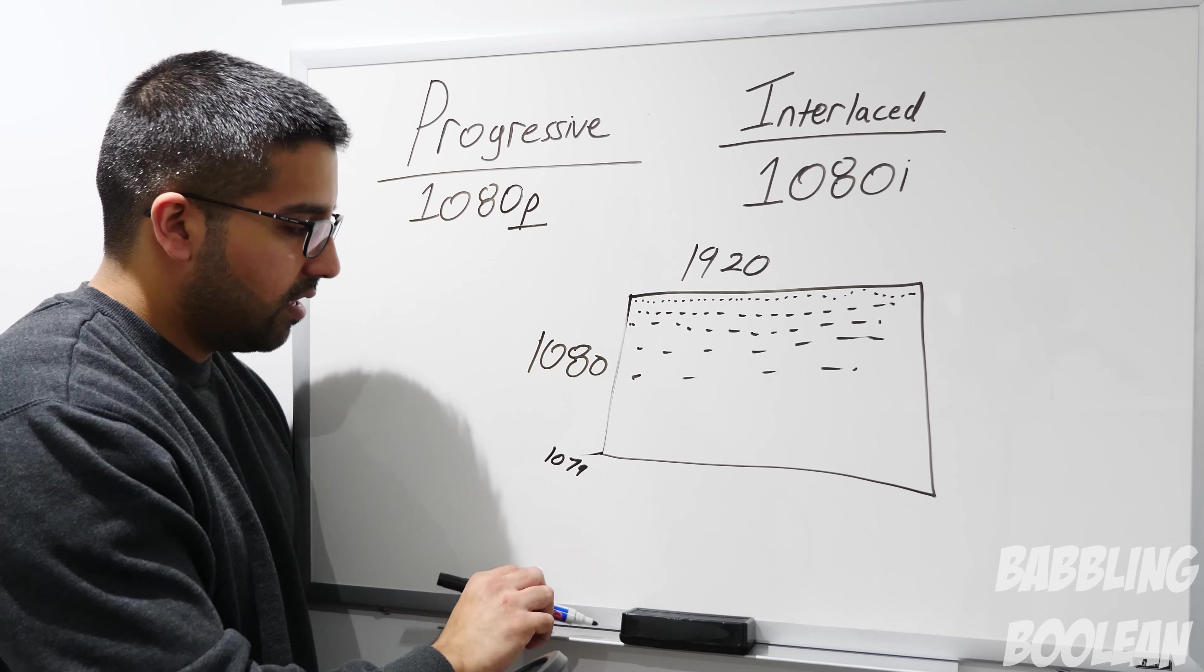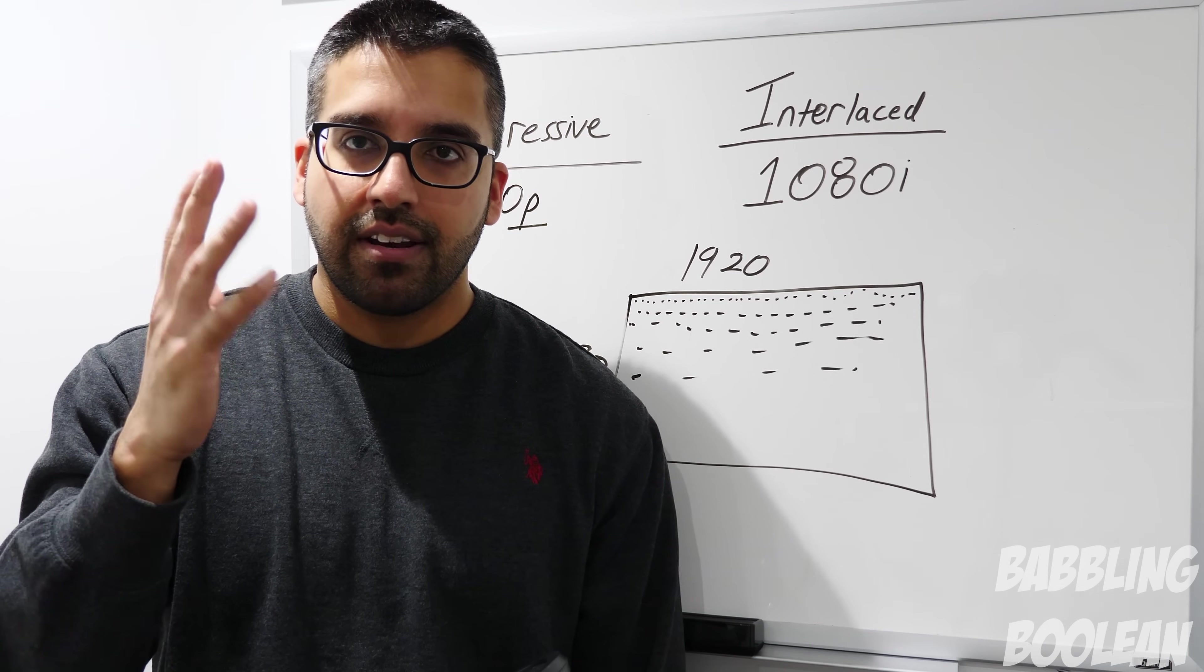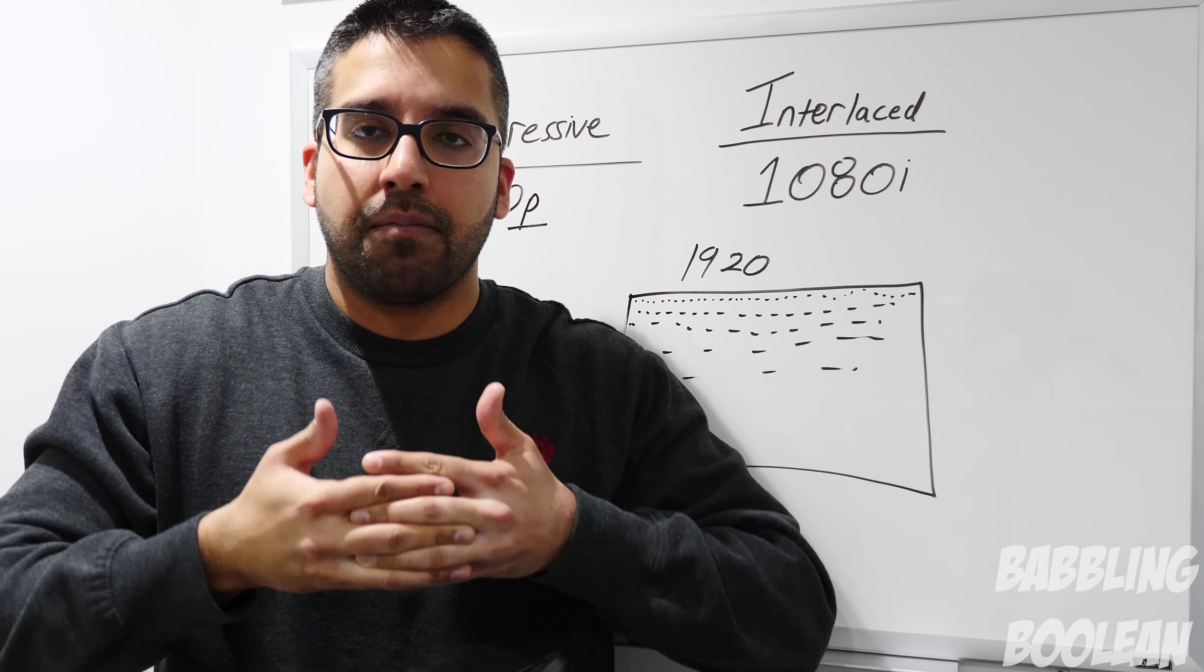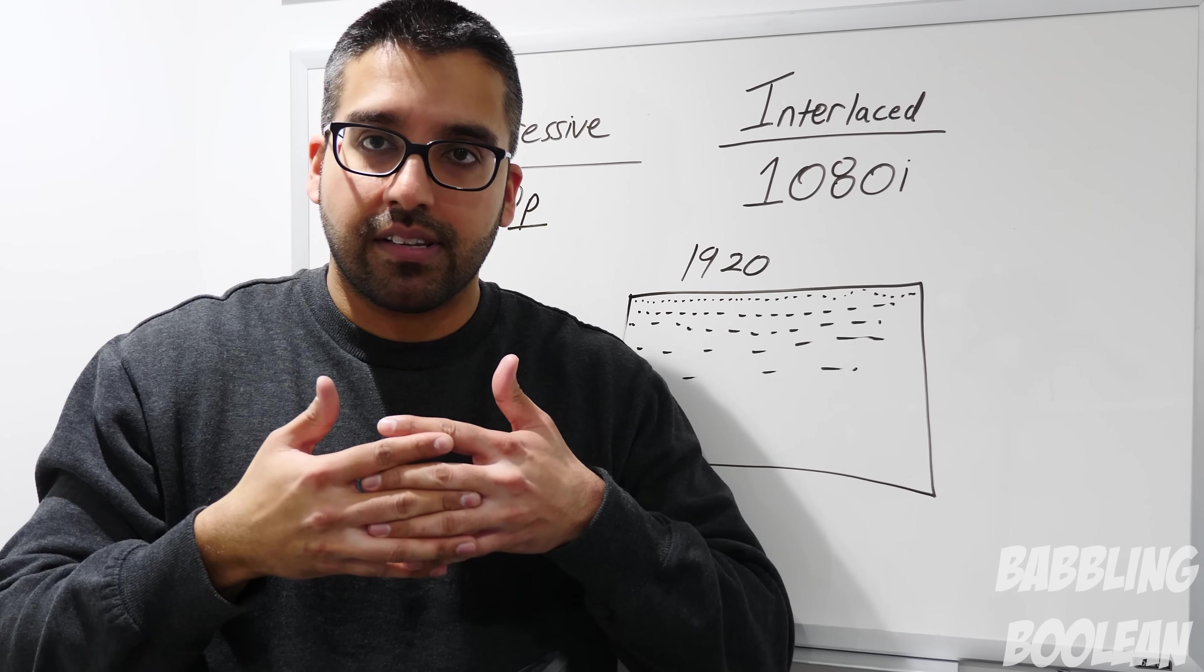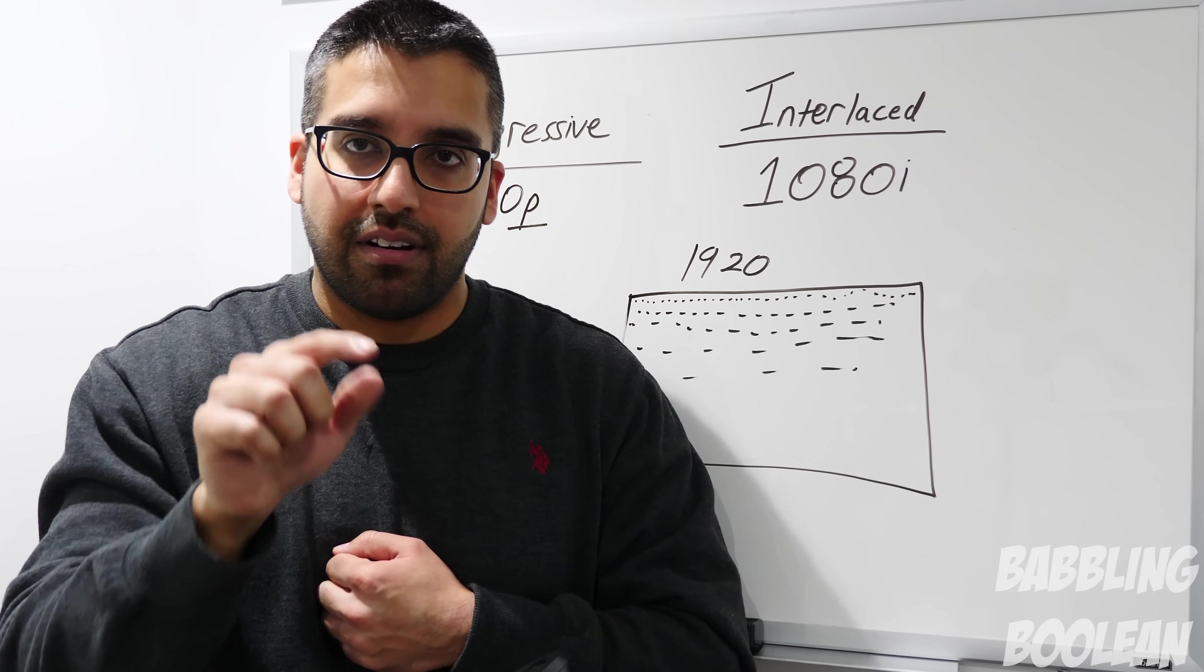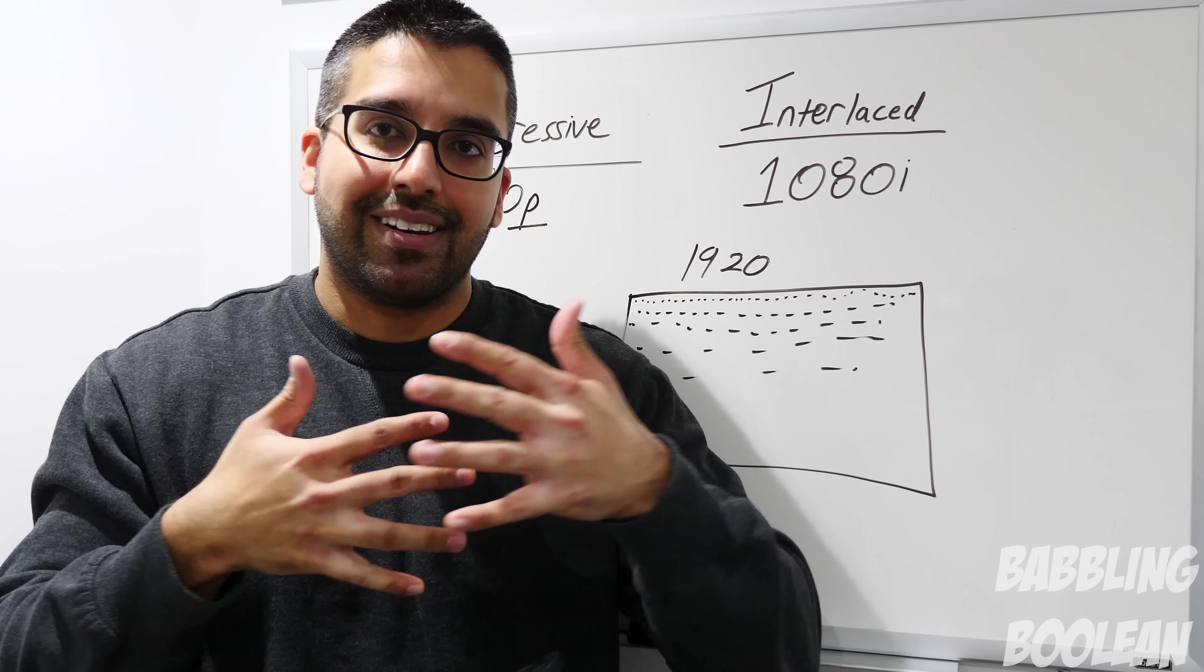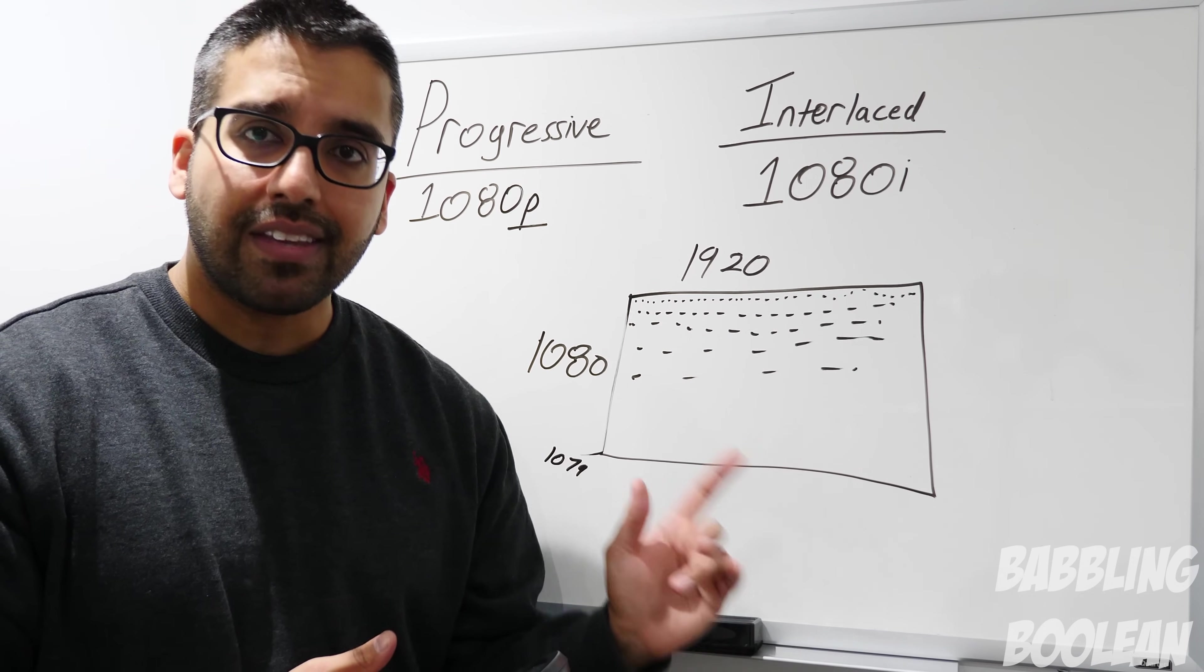This happens several times within a second, and it happens so fast you think you're watching a full moving image, but you're not. To make things easy to understand, let's pretend my right hand are the odd lines and this is the even lines. Put them together and you see someone playing baseball. Now you're seeing a whole picture. Let's pretend this flickering happens 30 times within a second. The odd lines will show an image, then flicker off, and the even lines project. They keep switching 30 times within a second. That is so fast that the human eye perceives it as a moving object.